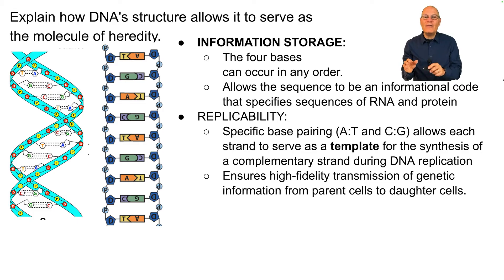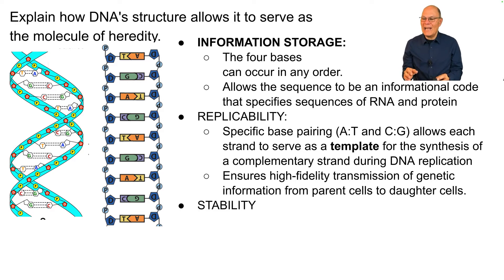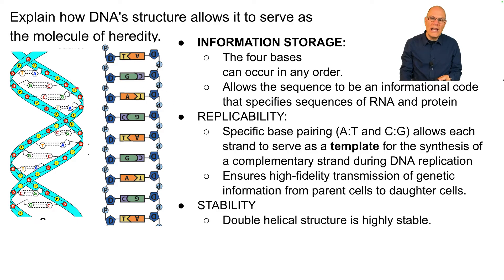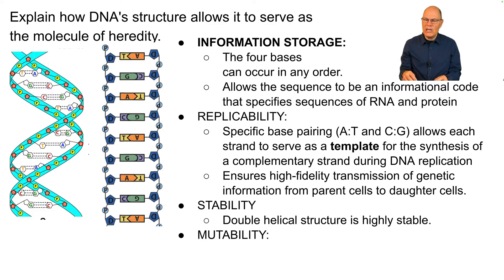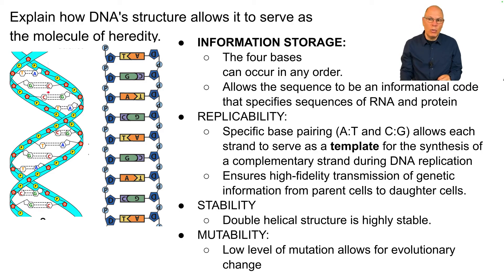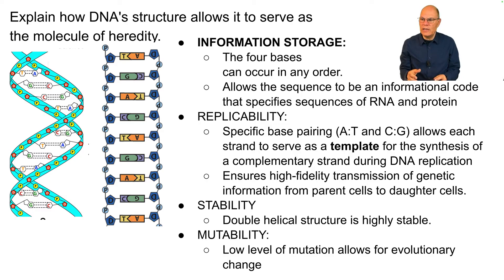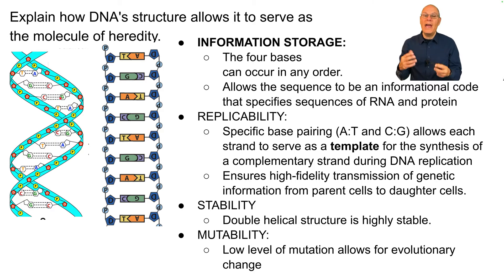That also ensures high-fidelity transmission of genetic information from parent cells to daughter cells. DNA is also highly stable — its double helical structure protects the sequence of bases inside. But while it's stable, it's also capable of mutation. Mutability is the fourth characteristic: there's a low level of mutation where bases can change, either spontaneously or caused by mutation-causing factors in the environment, and that allows for change in the code, which allows for evolution.